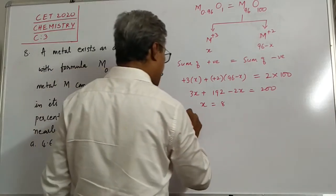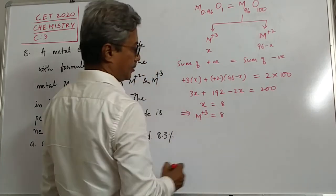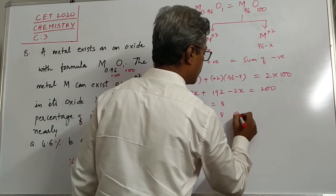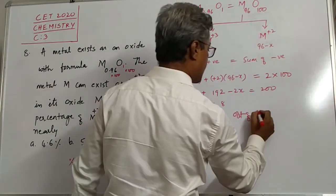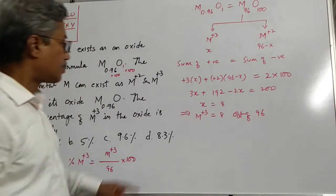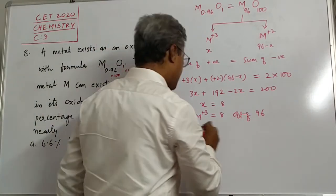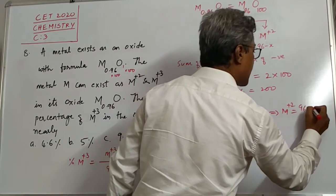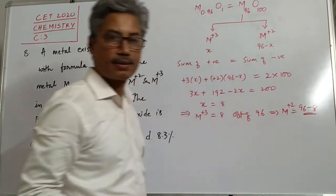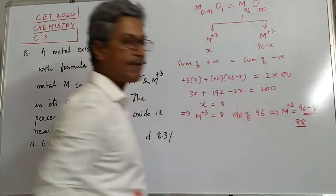So this implies that M plus 3 are 8 out of how many? 96. So M plus 3 are 8 out of 96. It means, this means that M plus 2 are 96 minus 8. This will be 88. That's not required now for us.